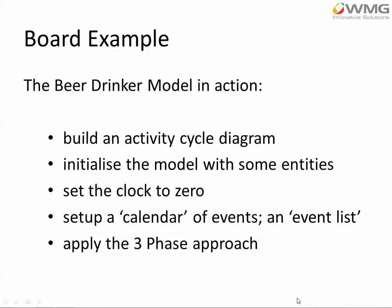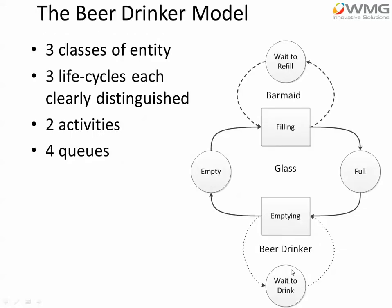In the example I'm going to show now we're going to apply the three-phase approach. So here's our beer drinker model. We have three classes of entity: glass, barmaid, and beer drinker. We can see each of the life cycles clearly in the diagram. There are two activities, filling and emptying, and four queues.